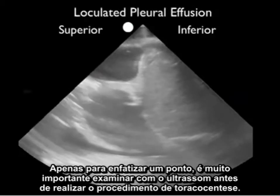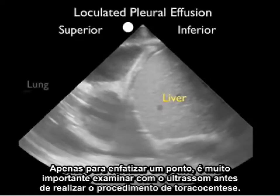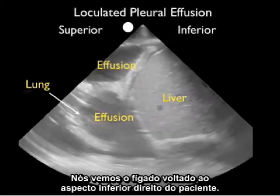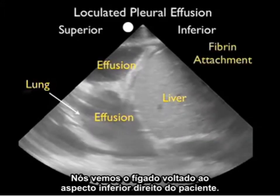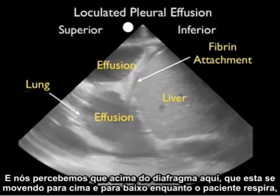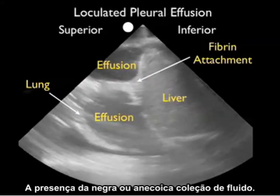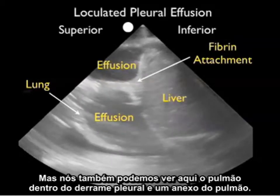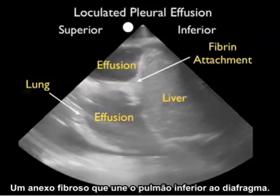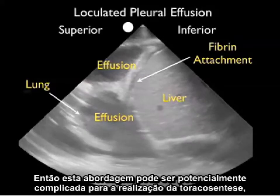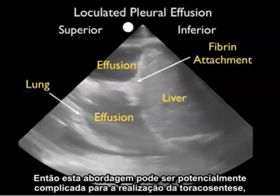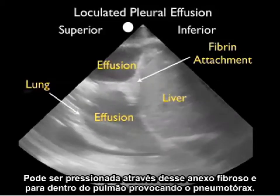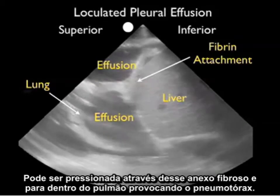To emphasize the importance of looking with sonography prior to thoracentesis, this pleural effusion is taken from the right chest. We see the liver towards the inferior aspect and note above the diaphragm, which is moving up and down as the patient breathes, the presence of a dark or anechoic fluid collection. However, we also see lung within the pleural effusion and a fibrinous attachment that attaches the lung down to the diaphragm. This could be a complicated thoracentesis, as a needle entering that chest cavity could be pushed by that fibrinous attachment up into the lung, causing a pneumothorax.